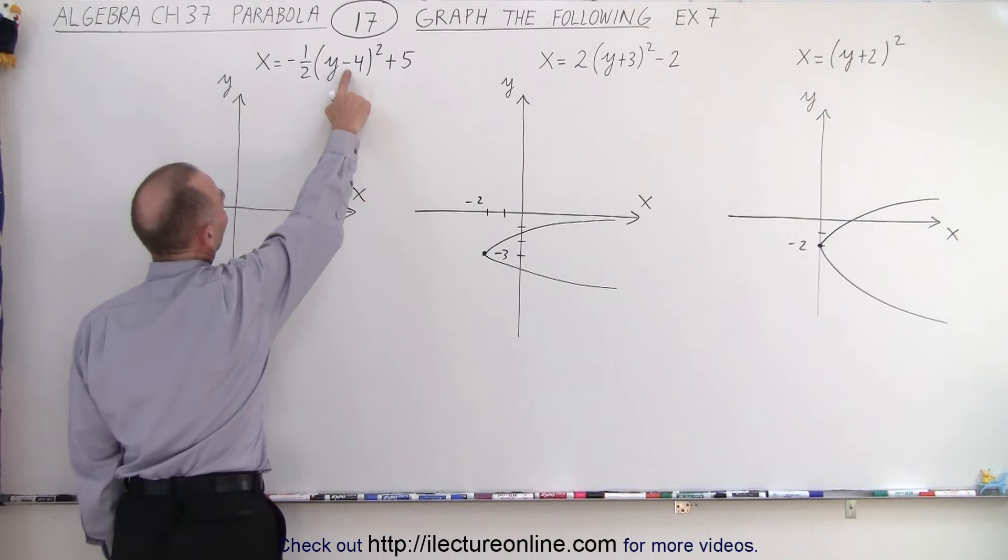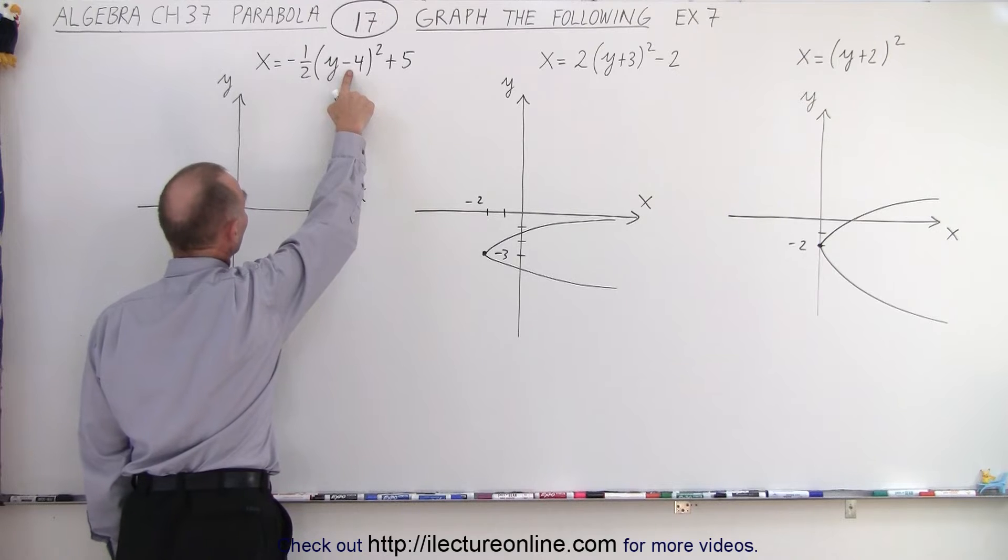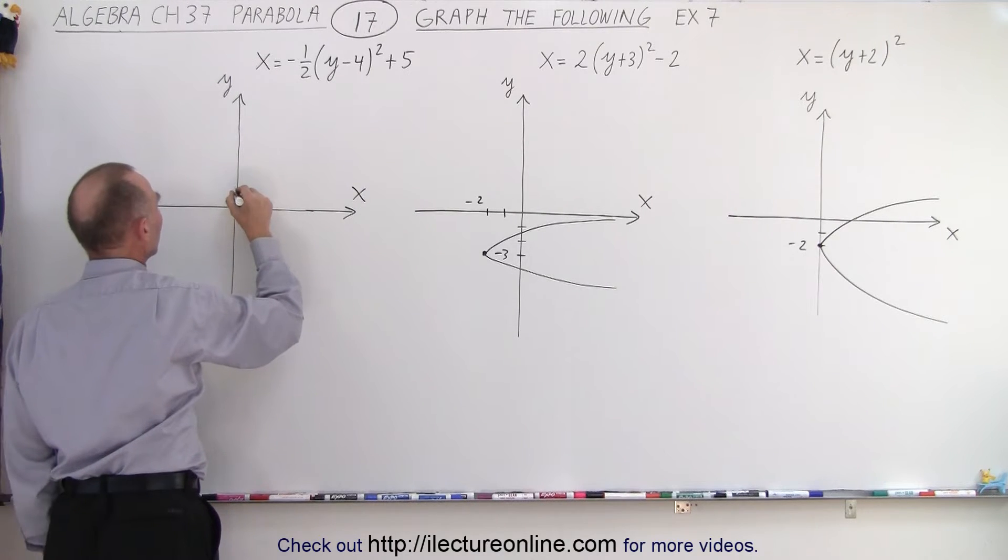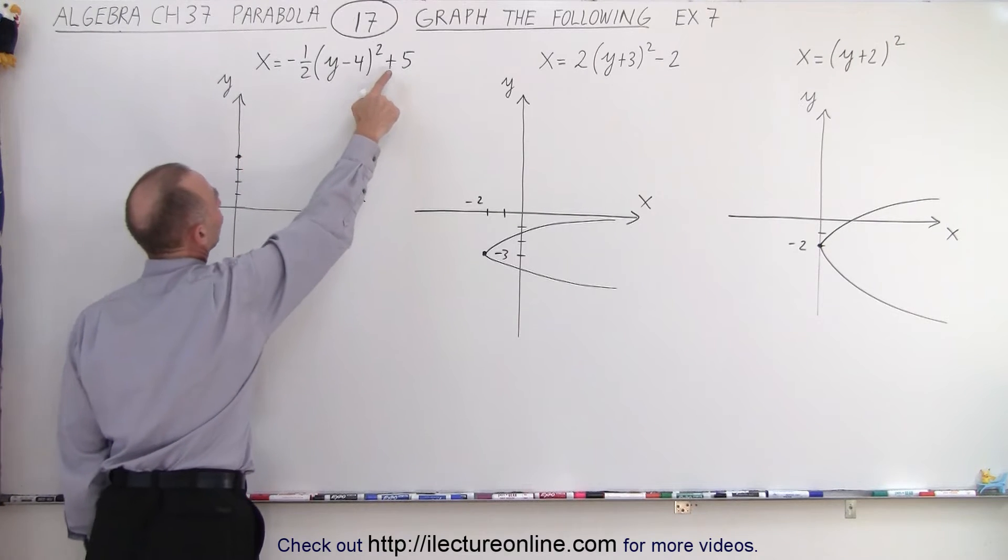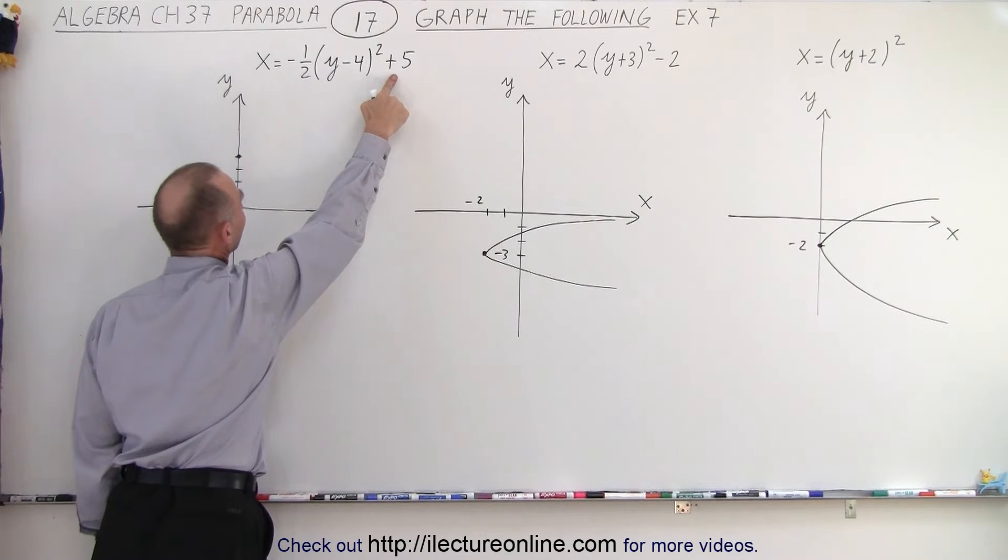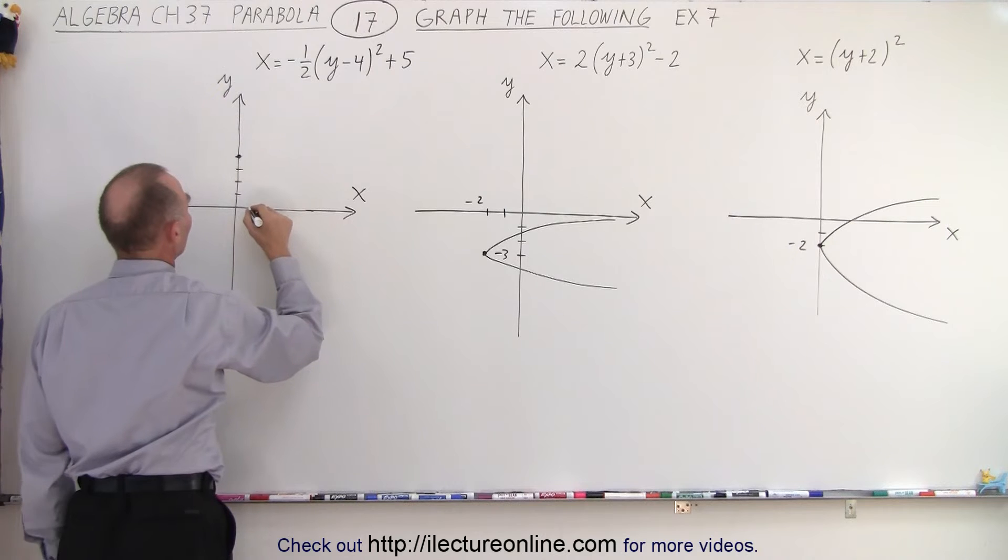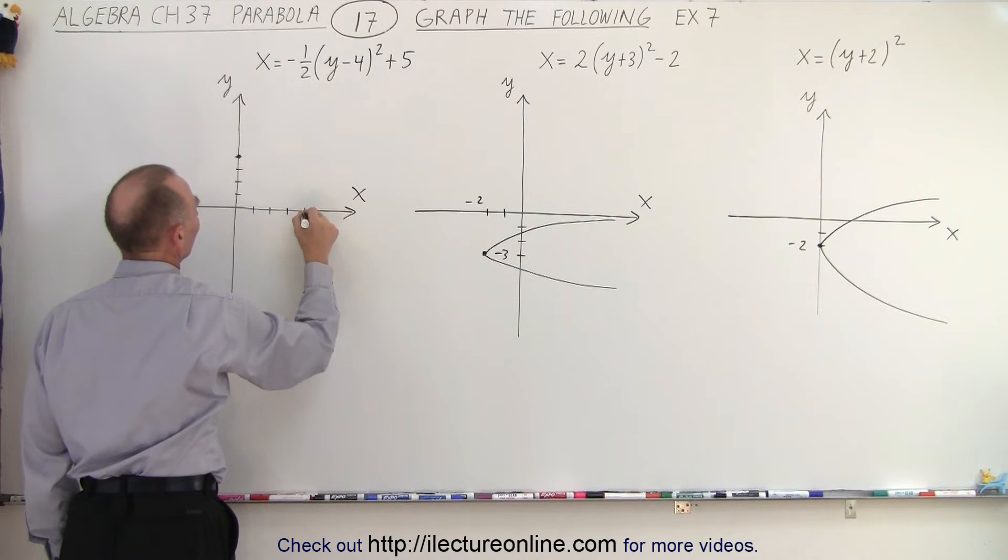Notice we have a shift in the positive direction along the y-axis. So that would be 1, 2, 3, 4, like this. And we have a shift in the positive direction along the x-axis. So that's 1, 2, 3, 4, 5.